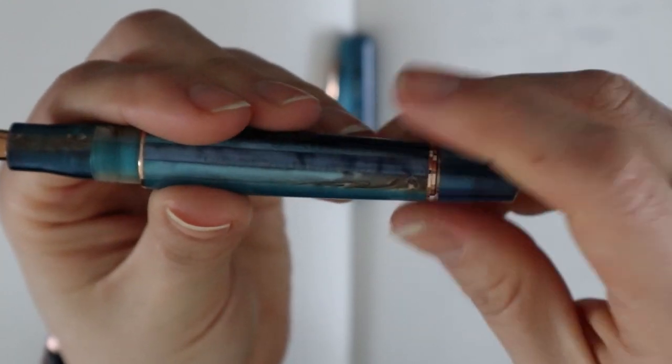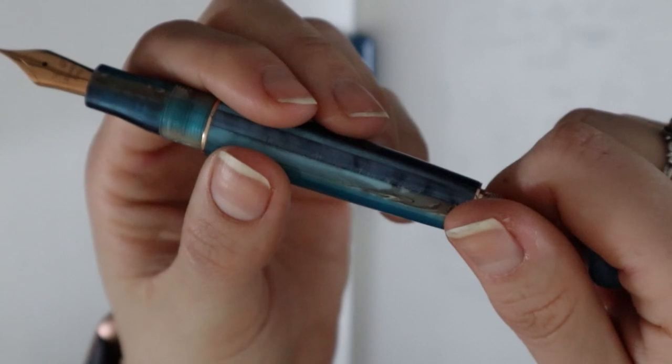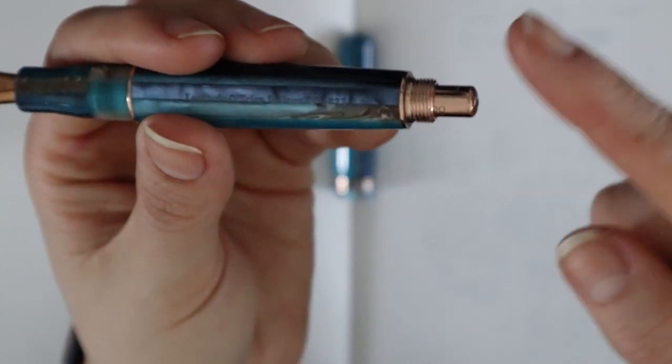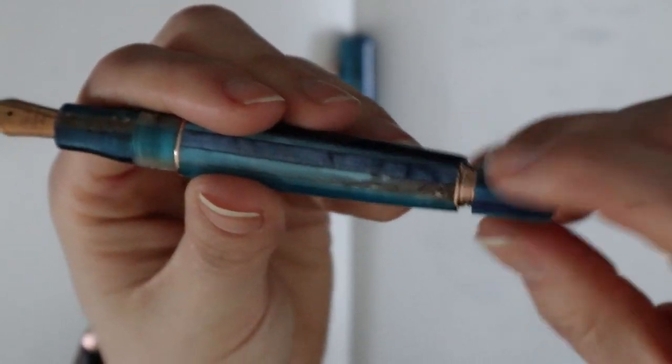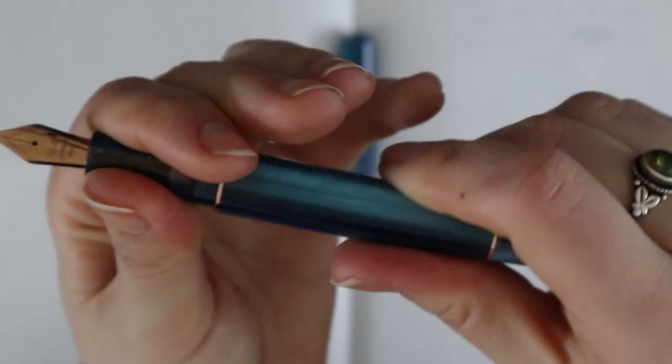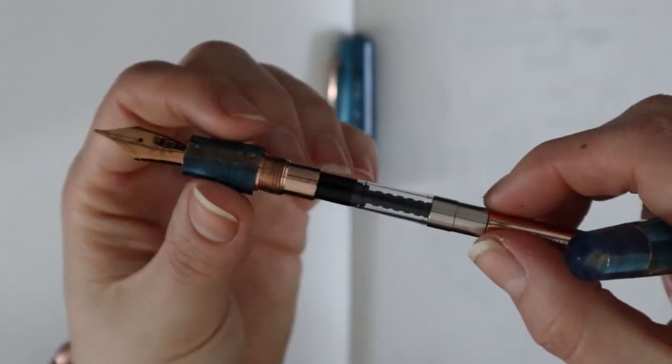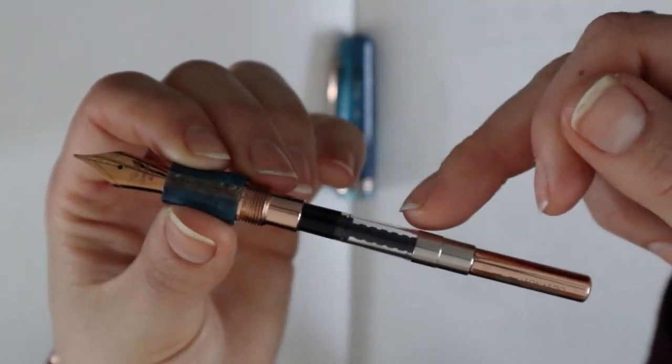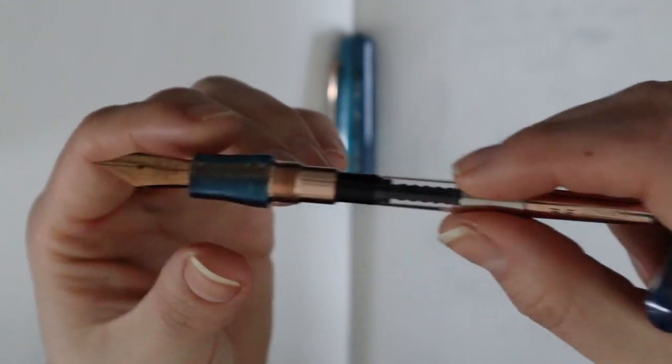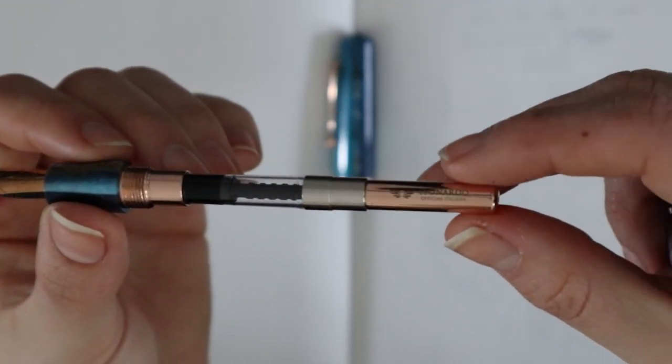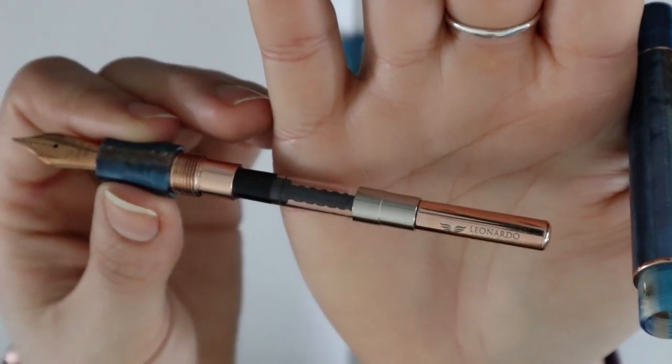I don't know if you can actually take out this converter, I have not tried. So you can operate this converter if you take off the blind cap. I did not do that, I just filled it by unscrewing the section. I also screwed the converter again because I wanted to push the ink a little bit more through. Inked it with Cross Violet, my favorite.